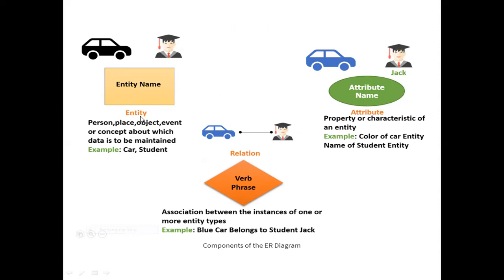All this discussion is represented with the help of a diagram. The entity is represented with a rectangle. The attribute is represented with an oval shape, and the relationship is represented with a diamond. For example, let's consider two entities: one is car and another is student. The car may have attributes like model number and color. Similarly, the student may have attributes like student ID and name. Now, how they are related — the blue car belongs to the student Jack. Blue is the attribute of the entity car, Jack is the attribute of the entity student, and 'belongs to' or ownership puts down the relationship between them. This is the beauty of the ER diagram.